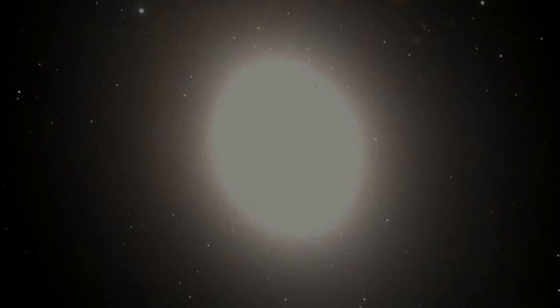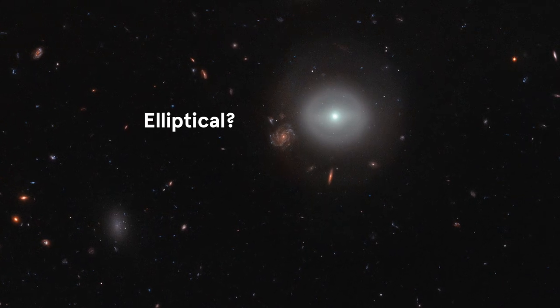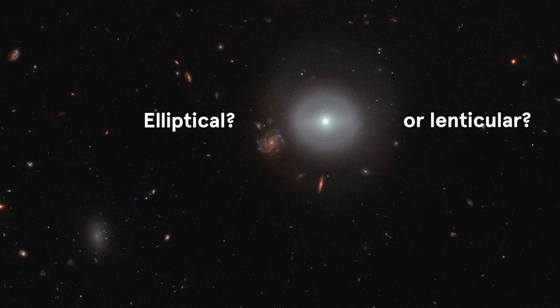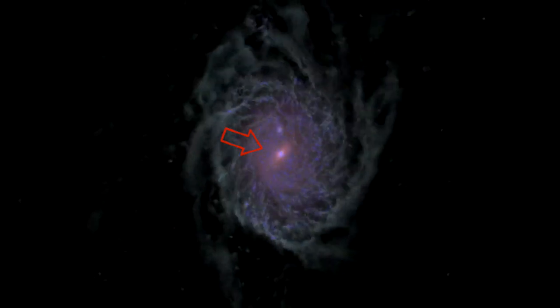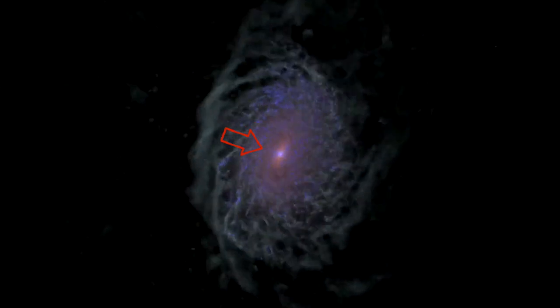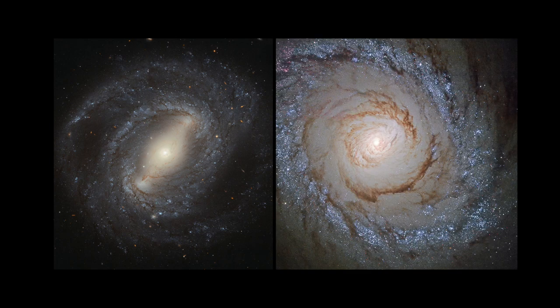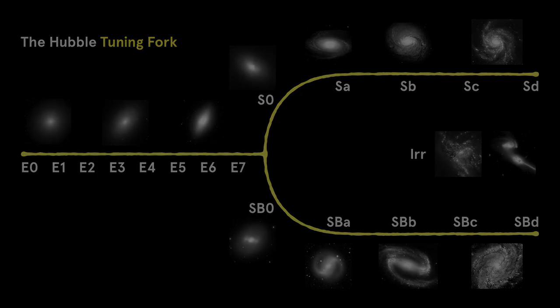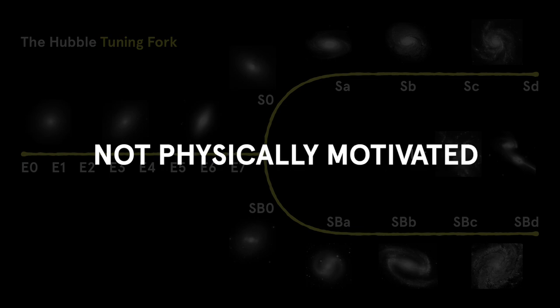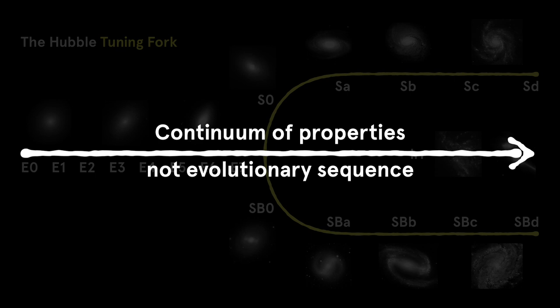Similarly, when seen close to face-on, it can be hard to distinguish a disk from a bulge, making it hard to decide whether a galaxy is elliptical or lenticular. Astronomers now believe bars to be relatively short-lived structures, and there's little physical difference between barred and unbarred galaxies. Most importantly, the Hubble classification is not physically motivated, and the sequence represents a continuum of properties, and not an evolutionary or chronological sequence.